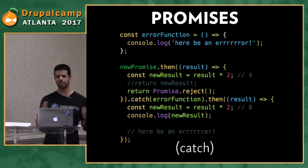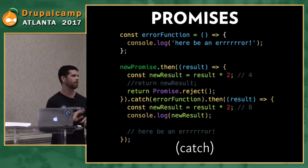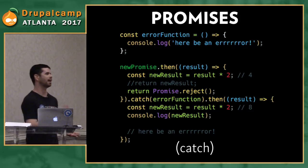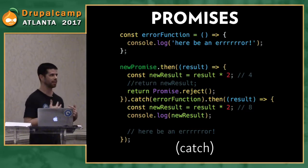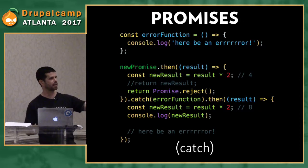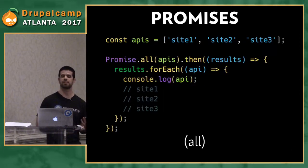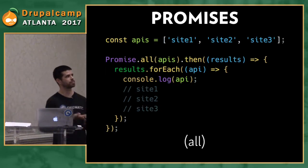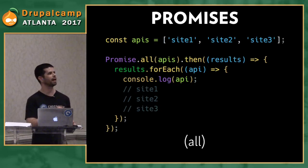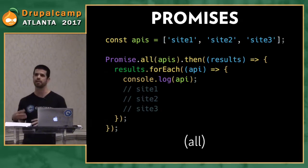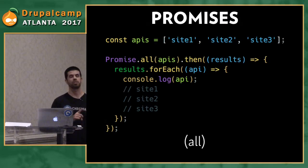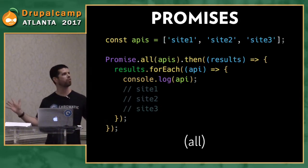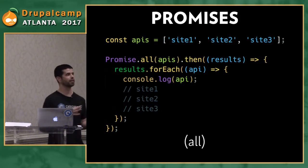You can also use .catch() on a rejected promise to run an error handler function. With Promise.all(), you can test a whole bunch of things simultaneously — pass in an array like [site1, site2, site3], then process the results for each. One caveat: if any one of the items passed into Promise.all() fails, the whole thing fails — which could be good or bad depending on what you're trying to accomplish.